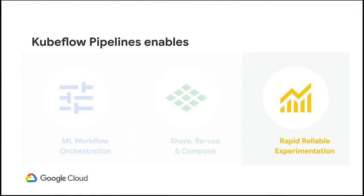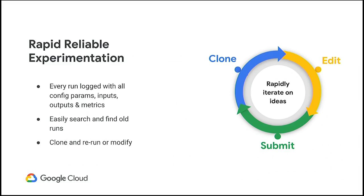Now let's talk about the third key value proposition of Kubeflow Pipelines. To motivate this, one of the winners of the latest Kaggle one-million-dollar prize competition said that for every idea that worked, they tried 100 ideas that failed. That is the nature of production machine learning — it's an applied science, you have to try many different ideas to find the ones that will work on your data for your application. We want to make it easy to rapidly iterate on ideas, but do so in a reliable and manageable way.